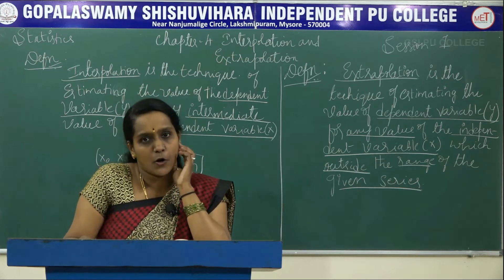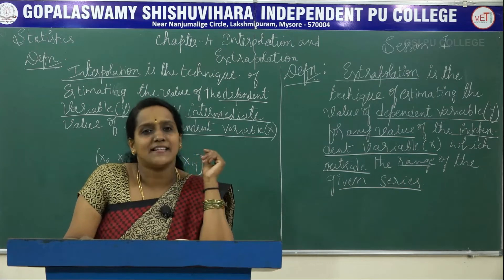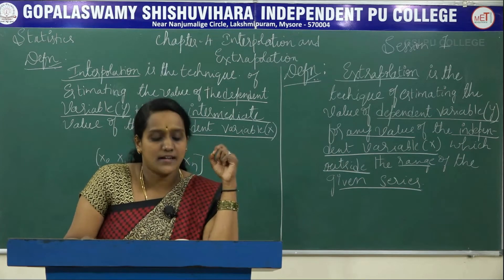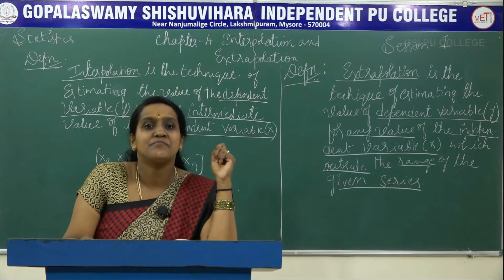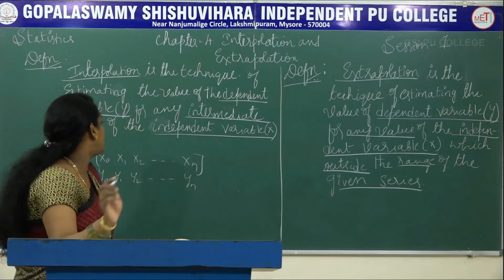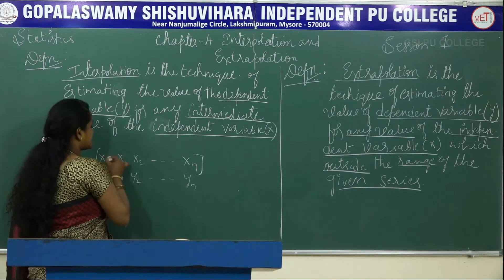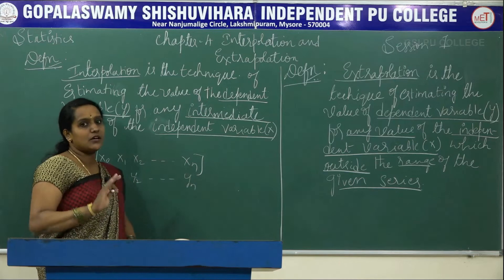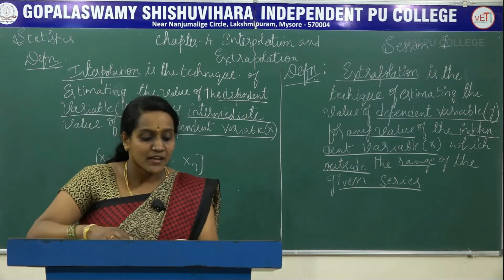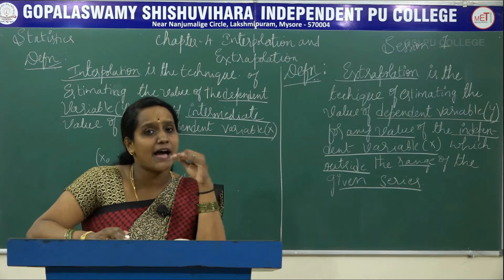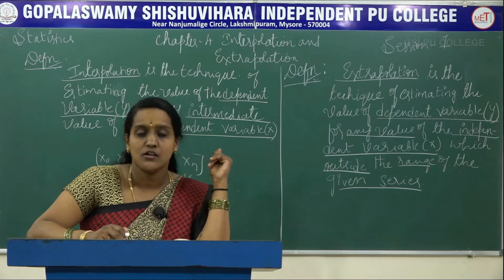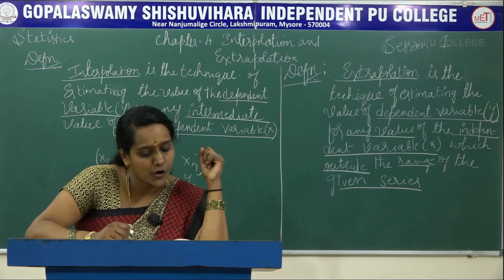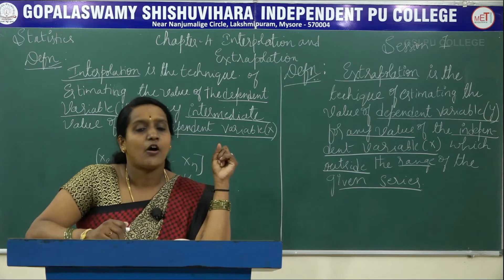Before solving problems on Interpolation and Extrapolation, we have some assumptions. The first assumption is: there are no sudden jumps in the values of the dependent variable from one period to another — meaning the data changes gradually. The second assumption is: there is a sort of uniformity in the rise or fall of the values of the dependent variable.